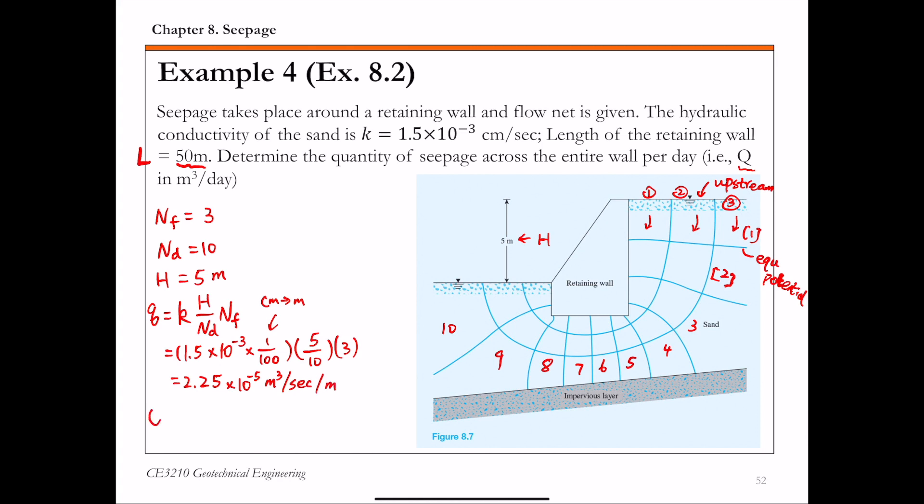Then capital Q, the total seepage quantity for 50 meters of retaining wall, is q times L. L is 50.